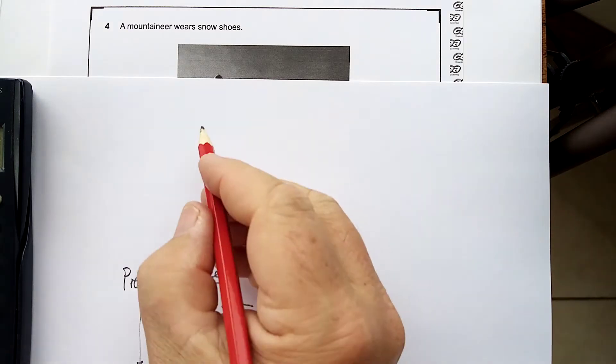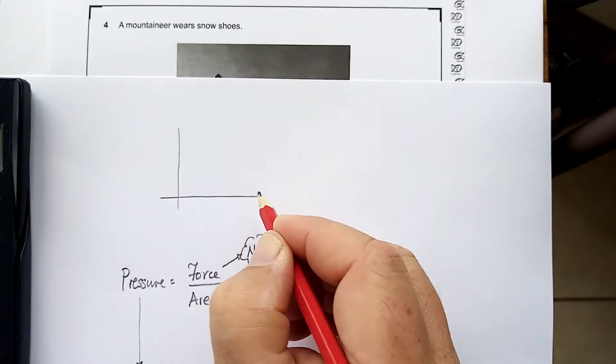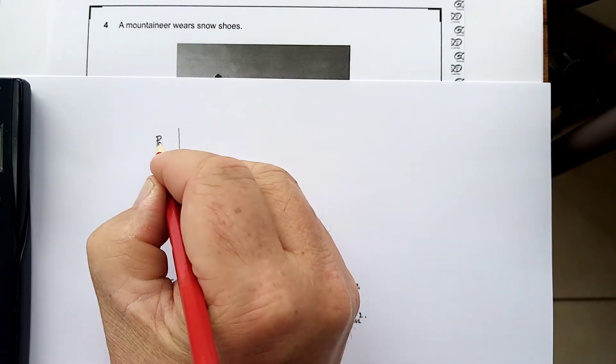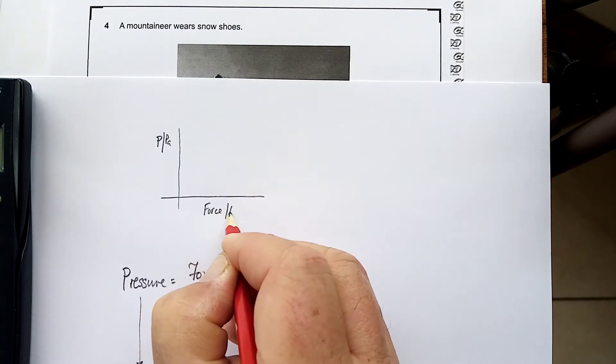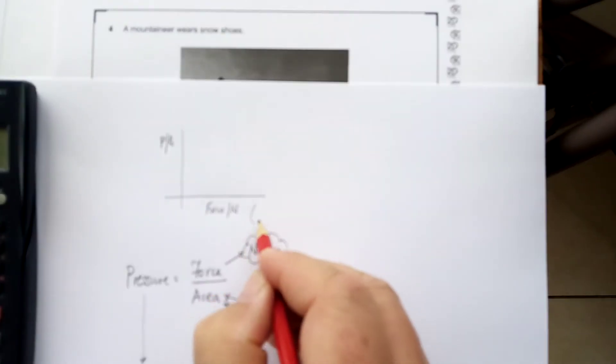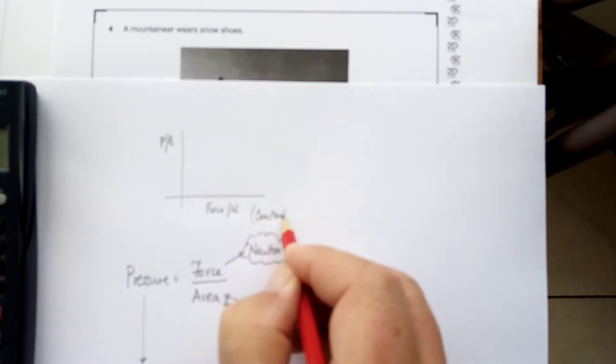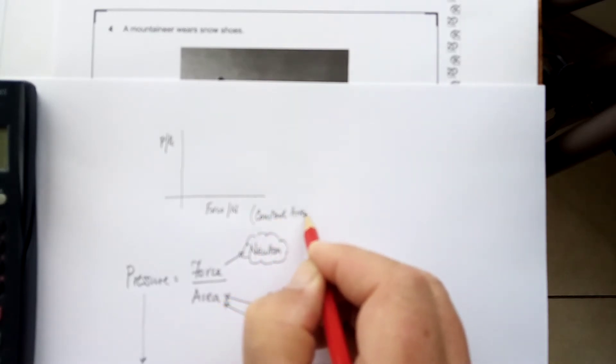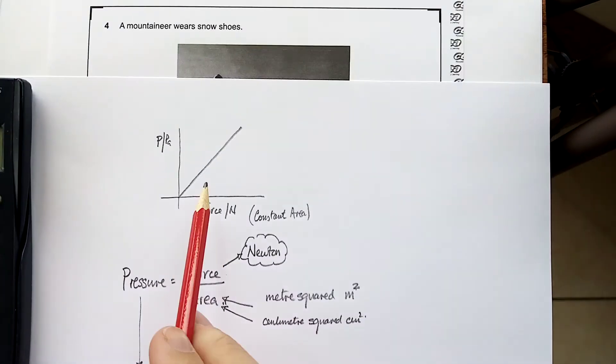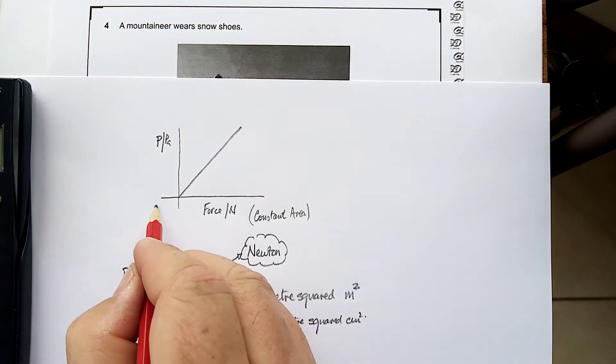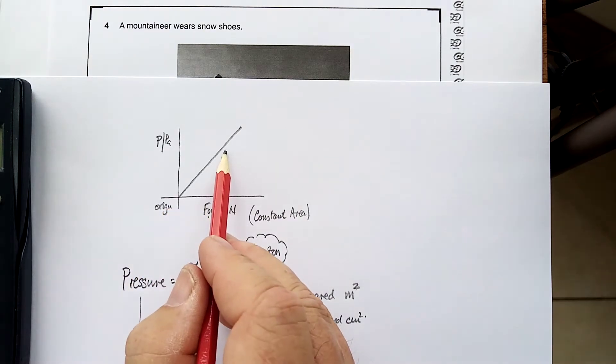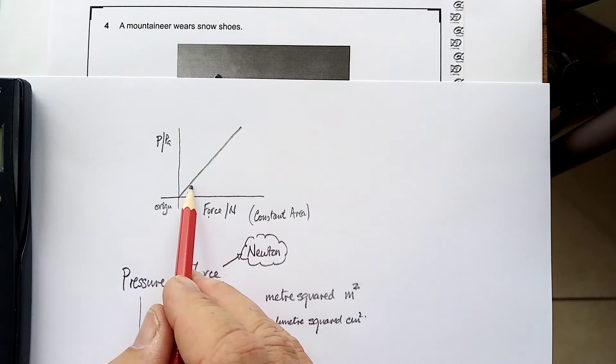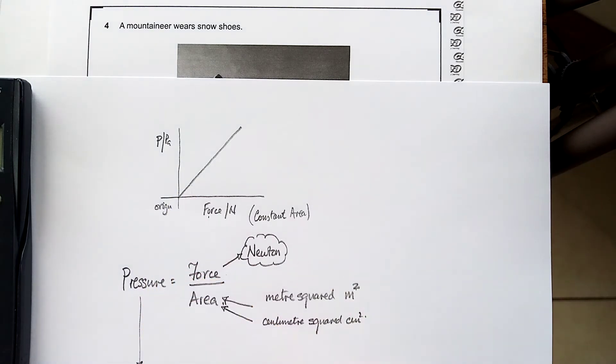So, a couple of simple things about pressure, yet again. What's the link between pressure in pascals and force measured in newtons? But remember, constant area here. You have to keep something constant. So, it's a linear relationship. It's directly proportional, because there's the origin. Big force, big pressure. Small force, small pressure. They are directly proportional.